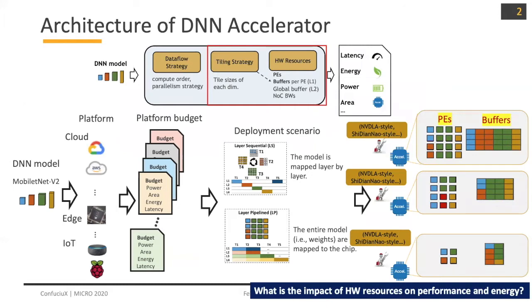Given a DNN model, for example MobileNet, you could have multiple platforms you want to deploy. For each platform, you will have different budgets and different deployment scenarios like sequentially executing your layers or doing it in a pipeline way. For different combinations, you have different hardware resource budgets like power and area, and different objectives like latency or energy. Our goal is to find the per-layer PE and buffer assignment so that we meet the hardware resource budget and optimize our objective.